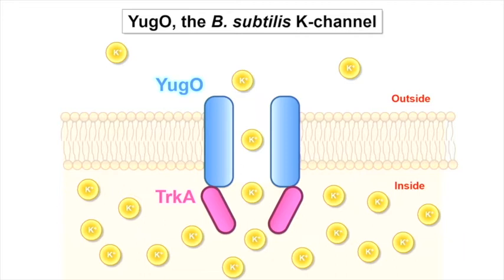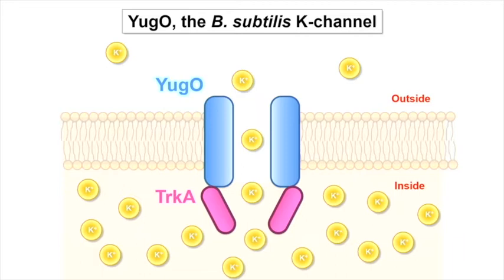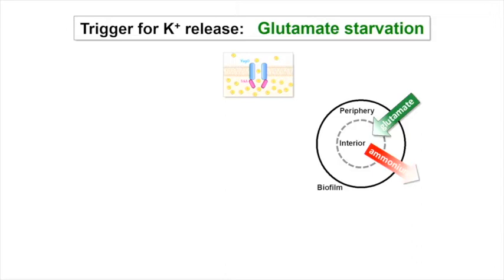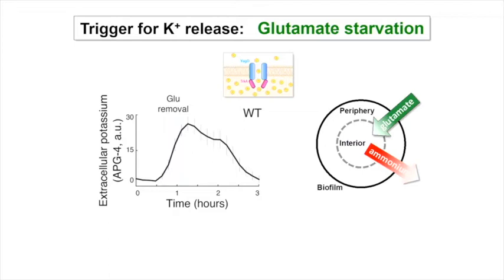Using the extracellular dye, we see large amplitude oscillations in potassium in the small volumes between cells. Cells maintain much higher internal potassium — around 300 to 400 millimolar inside compared to 8 millimolar outside. In Bacillus subtilis there is one known potassium ion channel, YugO, reported to be important for biofilm formation. Its gating domain is similar to other channels that sense the metabolic state of the cell. The hypothesis is that starvation for glutamate, which occurs in the interior, leads to activation of this ion channel and flux of potassium out of the cell.